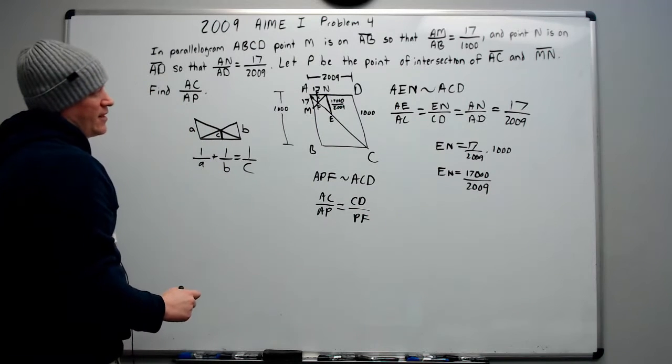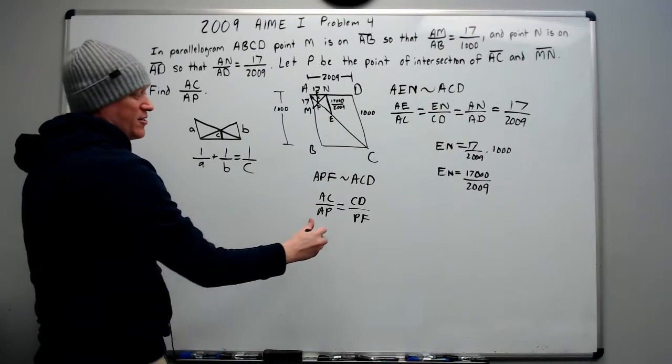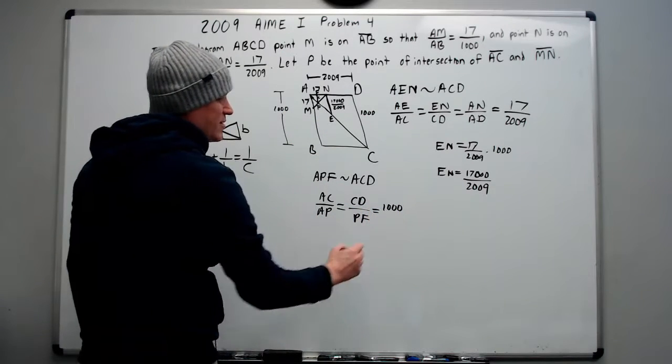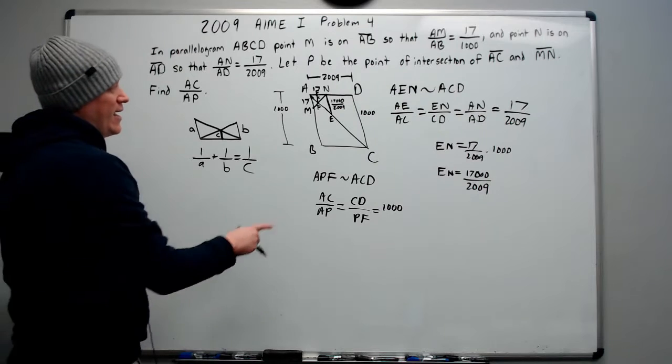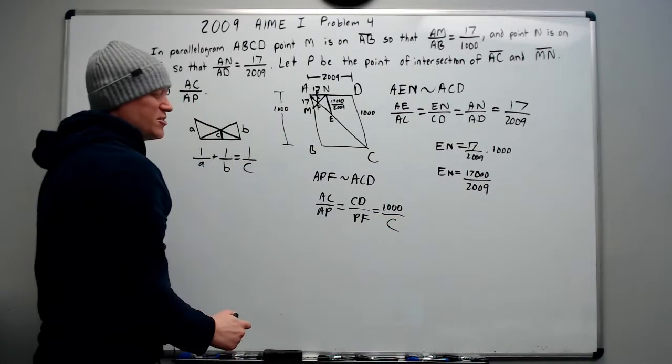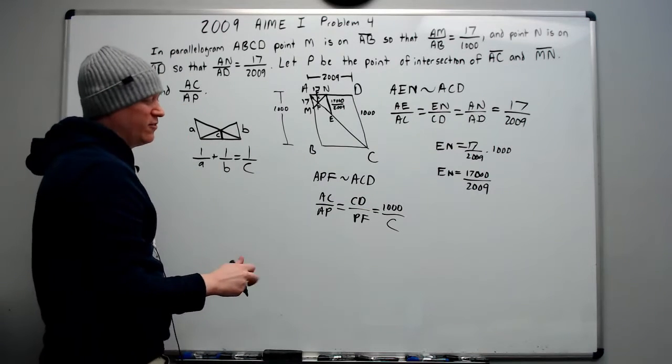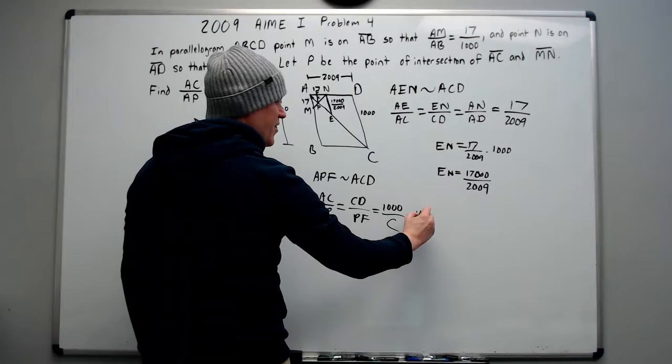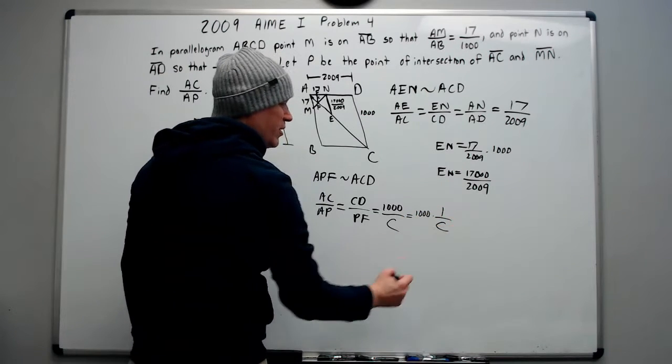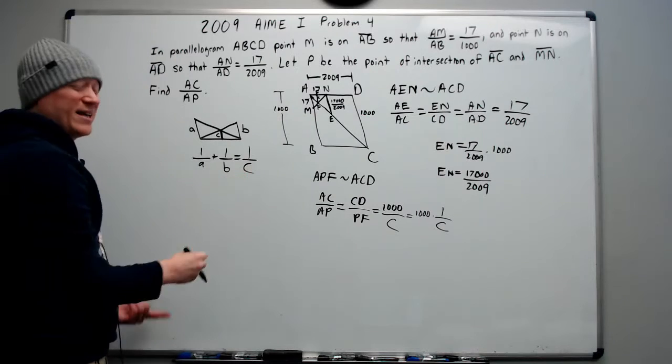AC over AP is also going to equal CD over PF. Right? And so if we can find PF, we actually get the answer, because we know that CD is 1000. Right? And PF is the value of C. So now this is the answer, because AC over AP is what we're looking for. I can call this 1000 times 1 over C if I want. And 1 over C is right here. So we're basically done.